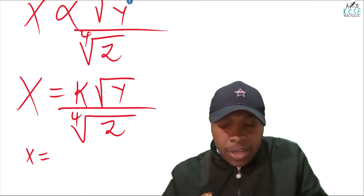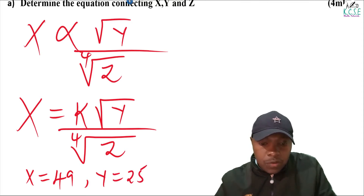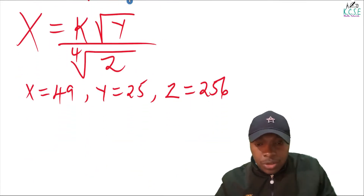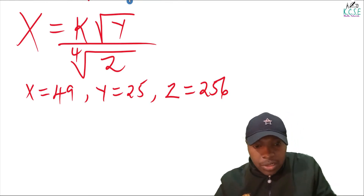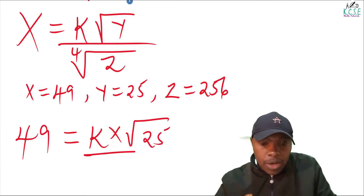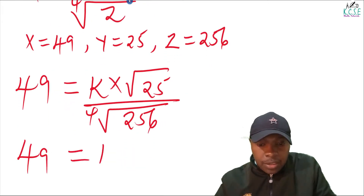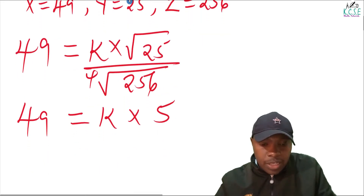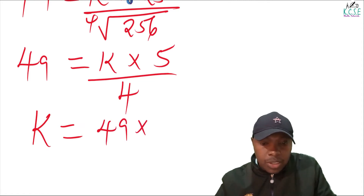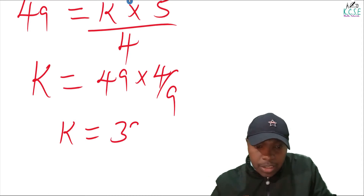Now we're given x is 49, y is 25 and z is 256. We replace these values in the equation to obtain the value of the constant k. So 49 equals k multiplied by the square root of 25, which is 5, divided by the fourth root of 256, which is 4. Therefore, the value of k is 49 multiplied by 4 over 5, giving 39.2.